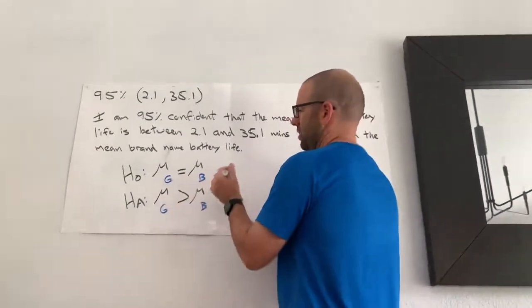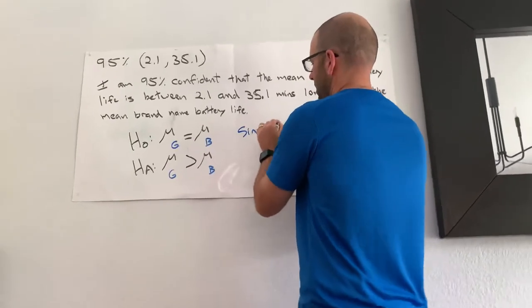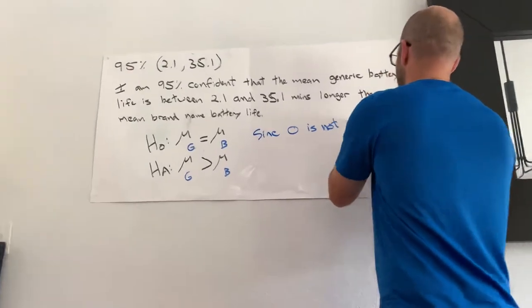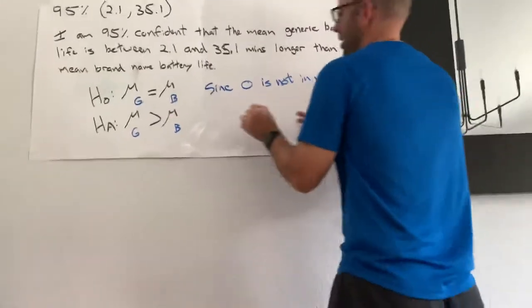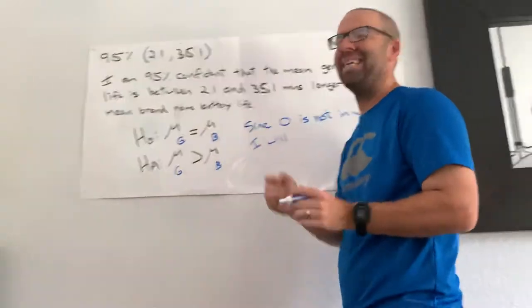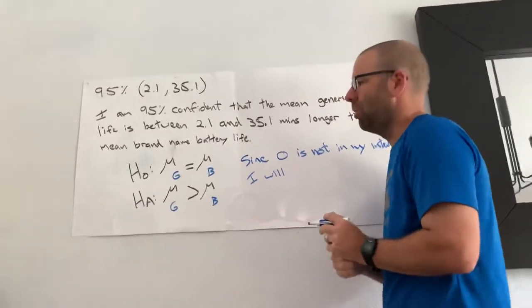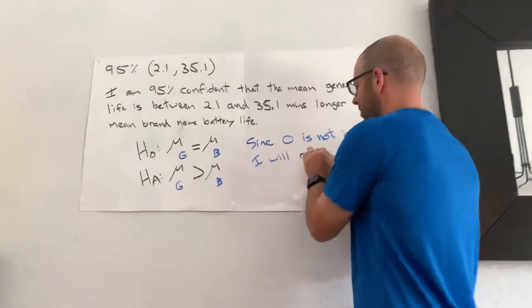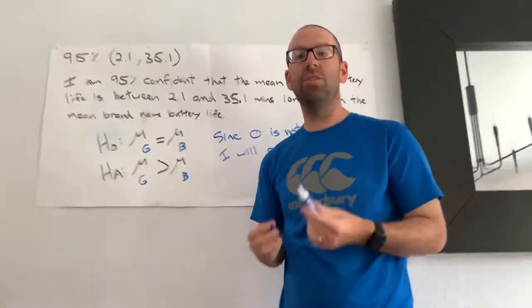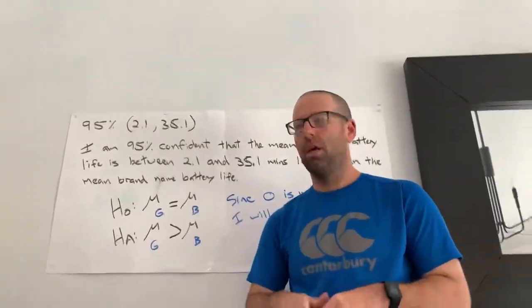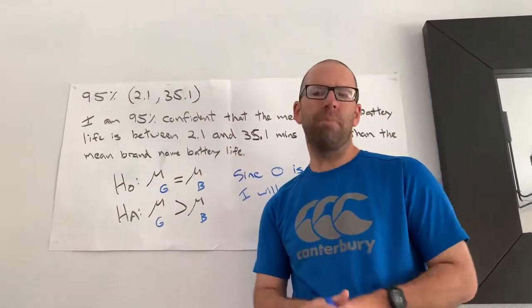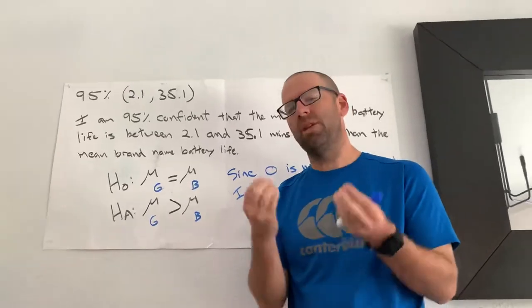You still have to do that when you perform a test. But here, my conclusion is going to be this. Since zero is not in my interval, I will, what? I'll let you think about that. Since zero is not in the interval, I will, what? I will reject the null. Zero would mean that these two means are the same, or that they could be the same. That's what zero means. A difference of zero would mean that the two means could be the same.